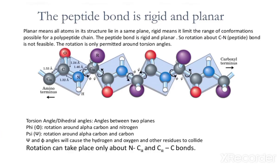The peptide bond is between the carboxyl and amine groups, so those groups will not rotate. In other parts of the side chain, other substances such as nitrogen and alpha carbon can rotate amongst themselves, or the alpha carbon and its neighboring carbon (center carbon) can also undergo rotation.